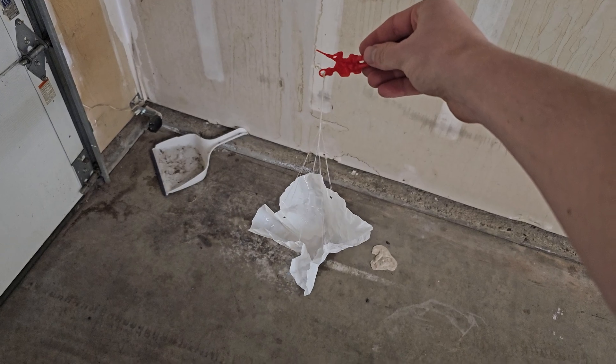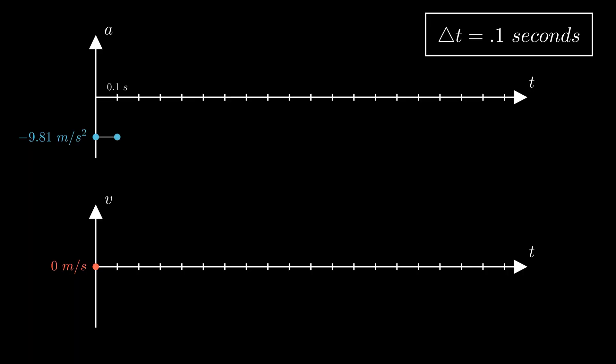Obviously this isn't true because as soon as he starts moving there will be drag, but we can check if this time step is small enough later, so let's just continue for now. If the parachute man accelerates at this constant rate for 0.1 seconds, based on the definition of acceleration, we can integrate to find out how much the velocity changed during this step.